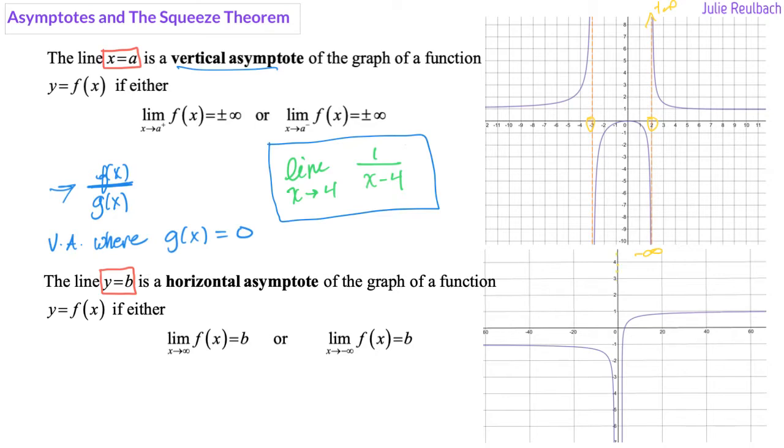The vertical asymptote here is not shown, but it's obviously at x equals 0. And both sides of the function are going to negative infinity. They can both go to positive infinity or negative infinity, or each side can go to either. So you do have to look at the left and the right.